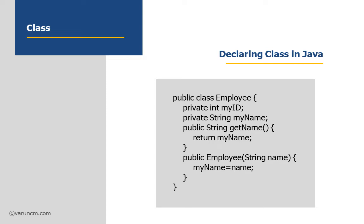This is an example for declaration of the class, where you could see public class Employee. So public is the modifier, class is the keyword, followed by the class name — that is Employee. Inside the curly braces, you could see myID and myName, which are the data members. getName is the member function, and Employee is the constructor.